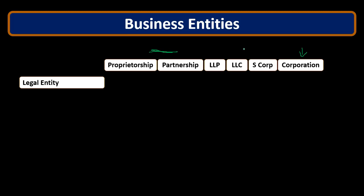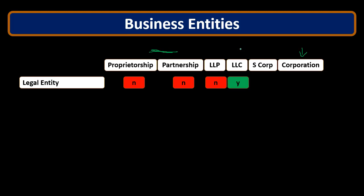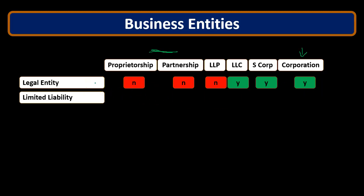On the other hand, the corporation has the problem of double taxation because, as a separate legal entity, it is taxed at the corporate level. Sole proprietors and partnerships don't have double taxation because they're flow-through entities. The LLP, LLC, and S corporation are attempts to be hybrids — to have liability protection while still avoiding double taxation. Regarding legal entity status: the sole proprietorship, partnership, and LLP are not separate legal entities, while the LLC, S corporation, and C corporation are separate legal entities.